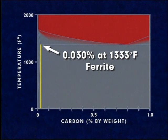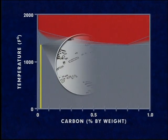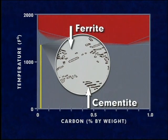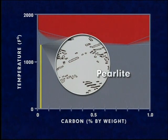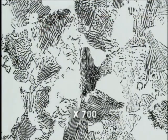Ferrite can retain only 0.025 percent carbon at this temperature. So to accommodate the carbon in excess of this amount, the remaining austenite transforms to a mixture of ferrite and cementite in alternating thin, plate-like layers. This structure is referred to as pearlite. At room temperature, the steel is mostly ferrite with patches of pearlite.